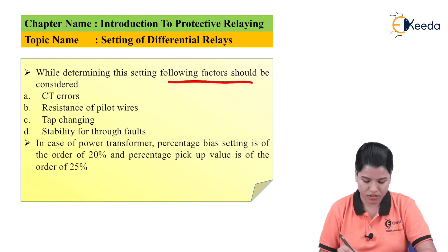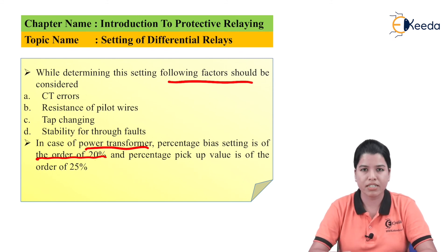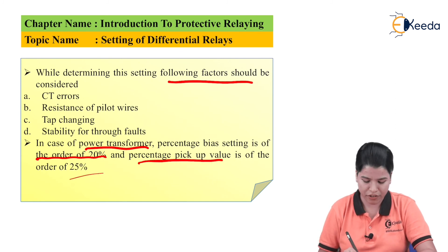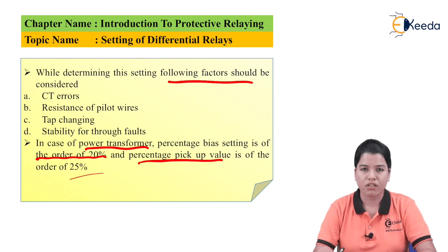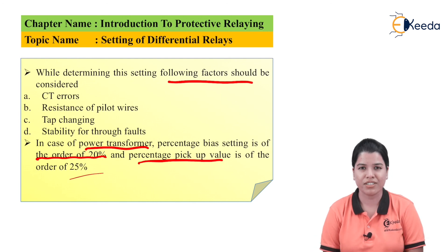In case of a power transformer, the percentage bias setting is of the order of 20% and the percentage pickup value is of the order of 25%. In this way, we have studied how to set the operating coil and restraining coil for the differential relay. Thank you friends for watching this video. Stay tuned with eKIDA and do subscribe to our channel eKIDA.